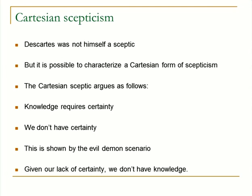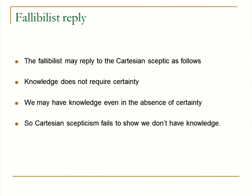Descartes wasn't a skeptic — he didn't mean to be a skeptic — and yet you can get a form of skepticism out of his views. Here's Cartesian skepticism: knowledge requires certainty; we're not capable of having any certainty — the evil demon scenario shows that we can't be certain of very little. Given that we can't be certain, it follows that we can't have knowledge. If certainty is required for knowledge and we can't have certainty, then we're not going to have knowledge. That's the skeptical result.